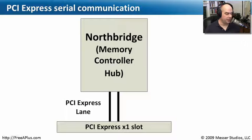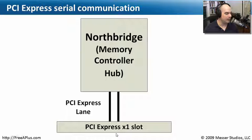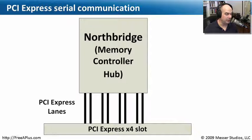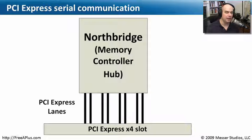With PCI Express you have a x1 slot — one lane going up and one lane coming back, communicating unidirectionally: one side going one direction, the other going the opposite. If we need a bigger amount of throughput, we simply add more lanes. Adding three more lanes gives a x4 connection. A PCI Express x4 is now transferring four times as much data, making it very easy to expand the capabilities of PCI Express.